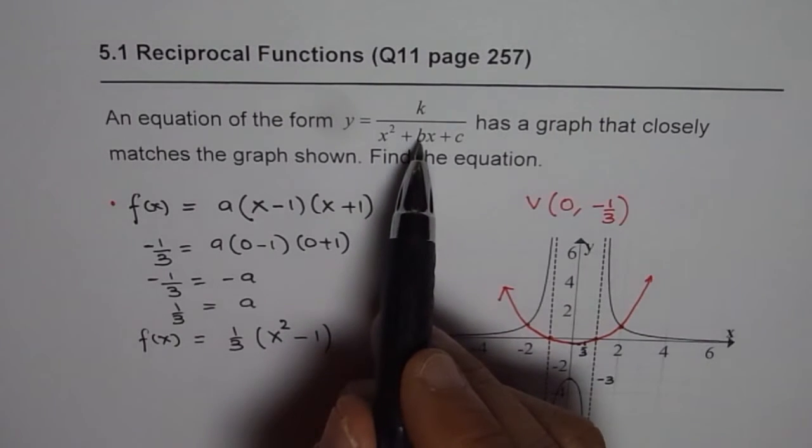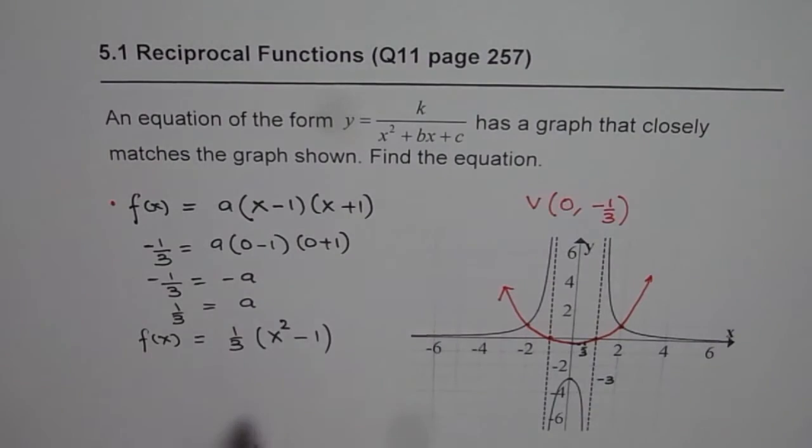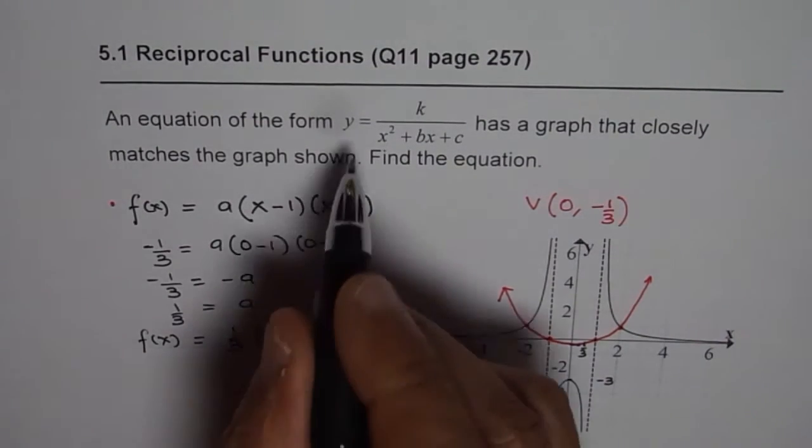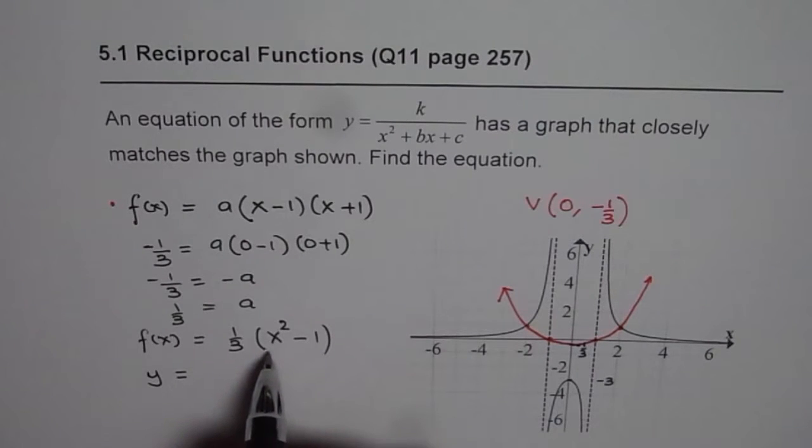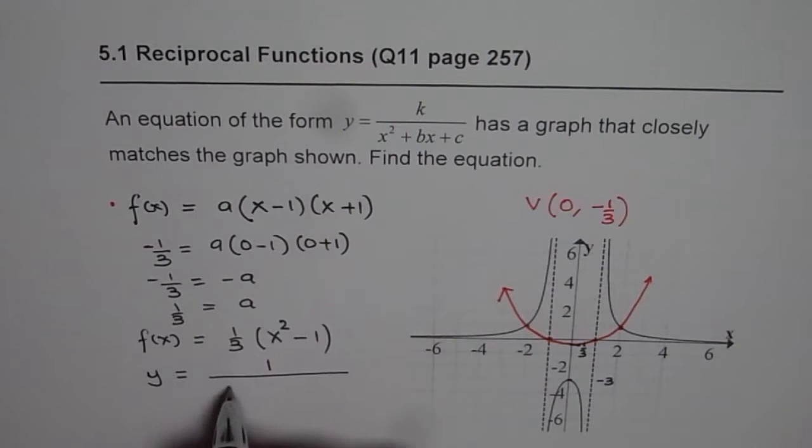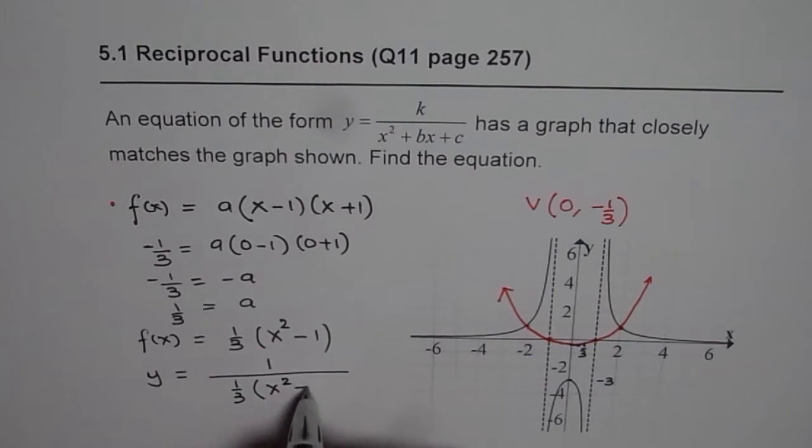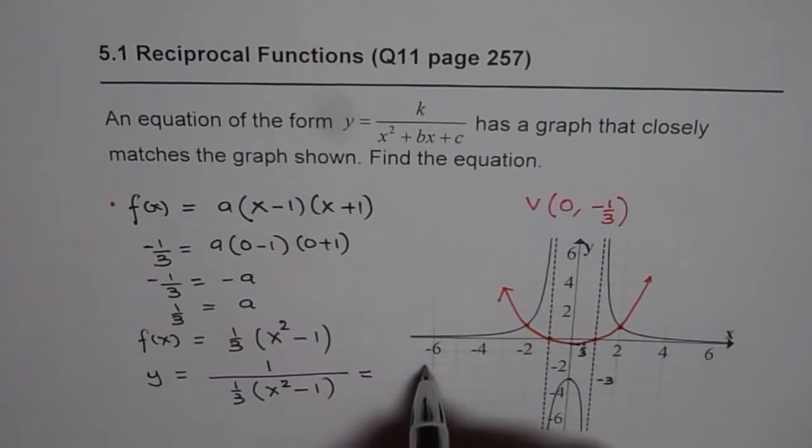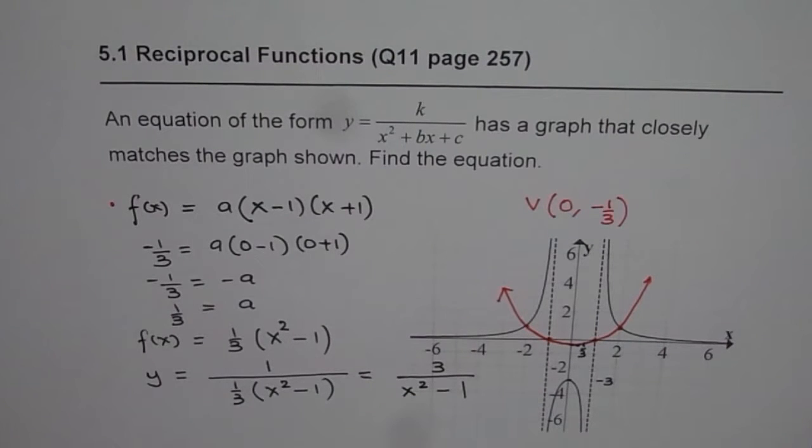Now if we do reciprocal of this function, what do we get? We can write it here. So we get y equals reciprocal of this function. So 1 over 1 over 3 times x square minus 1. So we can take 3 on the numerator side. So we get 3 over x square minus 1. So that is the function y given to us.